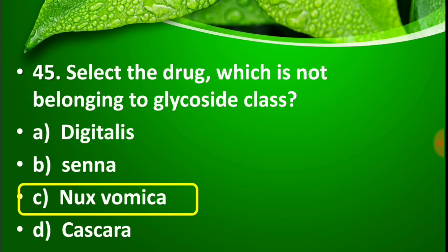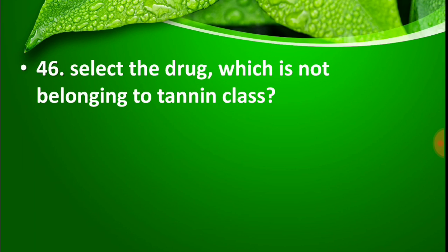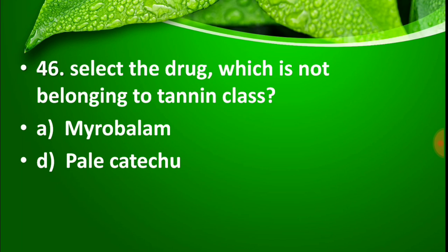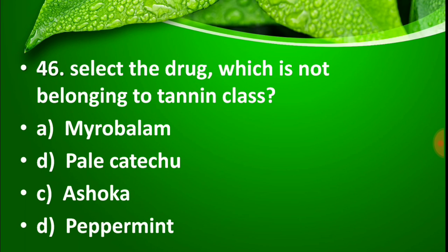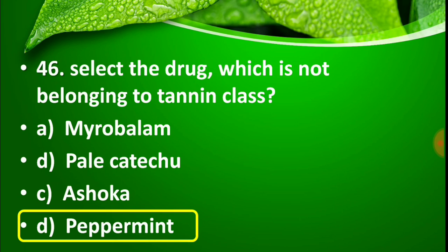Question number 46: Select the drug which does not belong to the tannin class. Option A: Myrobalan, Option B: Pale catechu, Option C: Asoka, Option D: Peppermint. The right answer is Option D, Peppermint. Myrobalan, Pale catechu, and Asoka are tannin-containing drugs, while Peppermint mainly comes under volatile oil-containing drugs.